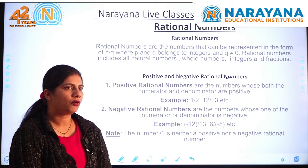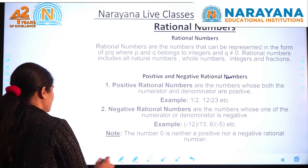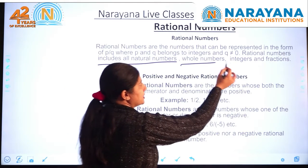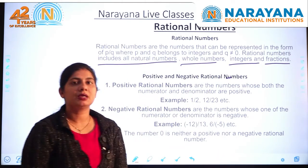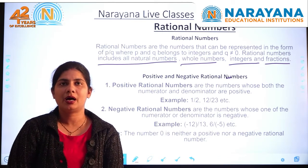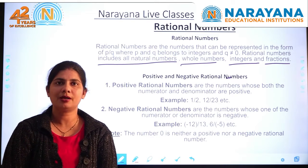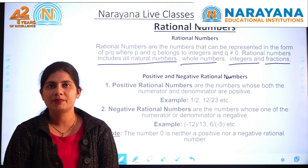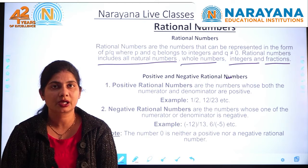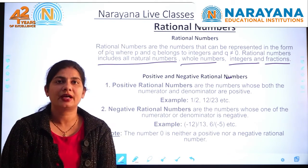So numbers in P by Q form where Q should not be equal to 0 are known as rational numbers. Rational numbers include all natural numbers, whole numbers, integers, and fractions — meaning all of these come under rational numbers. Natural numbers are also rational numbers, and whole numbers are also rational numbers.